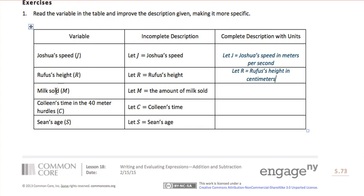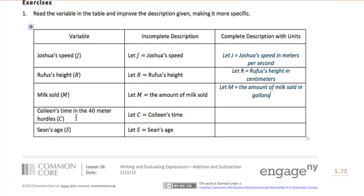Our third example is milk sold, represented by the variable m. Let m equal the amount of milk sold. Again, we don't know what that's supposed to mean. So m equals the amount of milk sold in gallons. Our next one: Colleen's time in the 40-meter hurdles, represented by c. Let c equal Colleen's time in seconds — it wouldn't make sense to measure it in hours or even minutes.